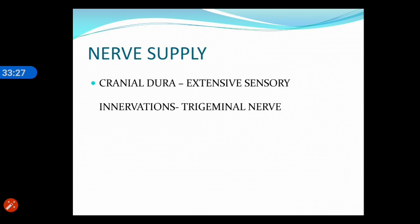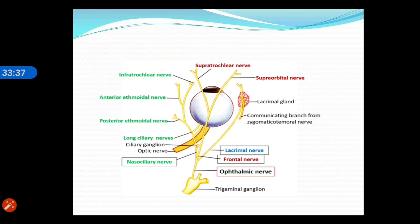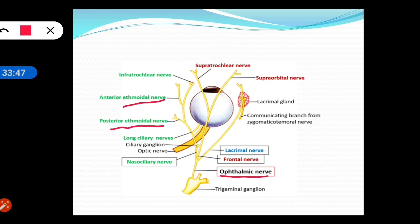The nerve supply is mainly sensory through the trigeminal nerve and its branches. The anterior cranial fossa is supplied by the anterior and posterior ethmoidal nerves, which are branches of the ophthalmic nerve. The middle cranial fossa is supplied by meningeal branches of the maxillary nerve, whereas the posterior cranial fossa is supplied by meningeal branches of the vagus nerve.